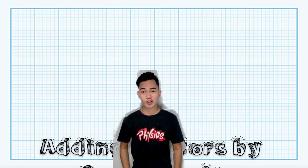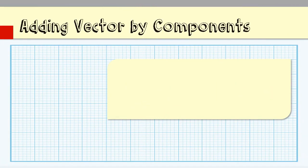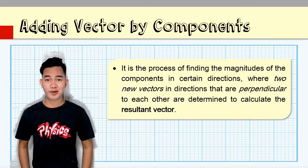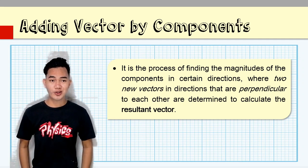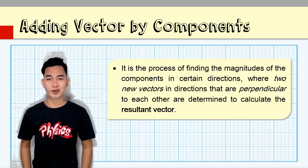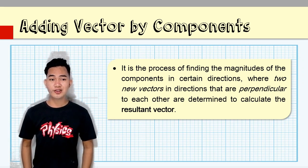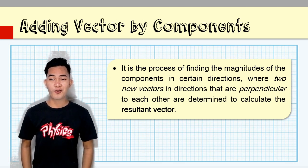Can you guess what this method is? Correct! Adding vectors by components. By definition, adding vectors by components is the process of finding the magnitudes of the components in certain directions, where two new vectors in directions that are perpendicular to each other are determined to calculate the resultant vector. Thus, in finding the resultant vector, it's not enough to just determine its magnitude and direction — we also need to solve for its components.